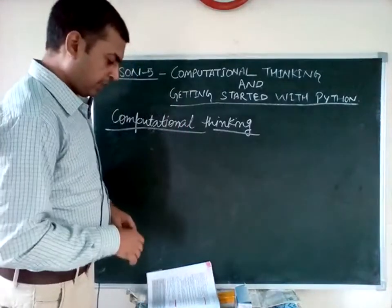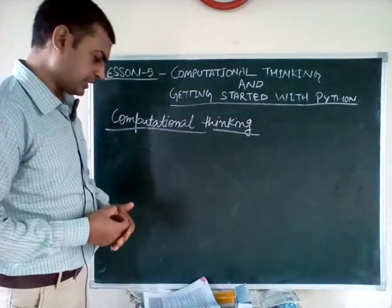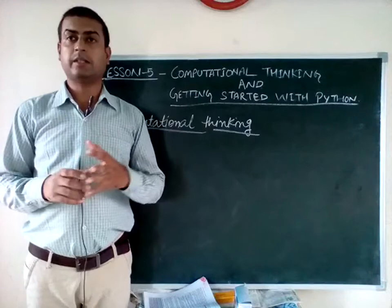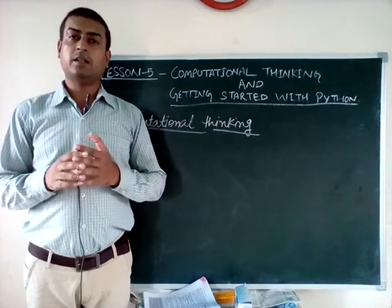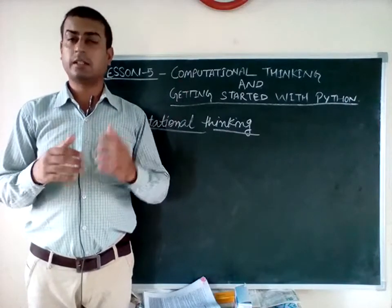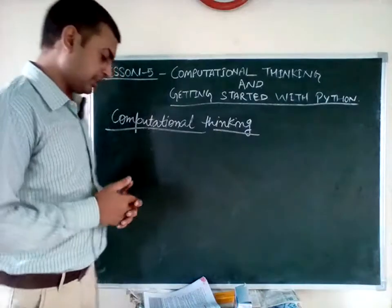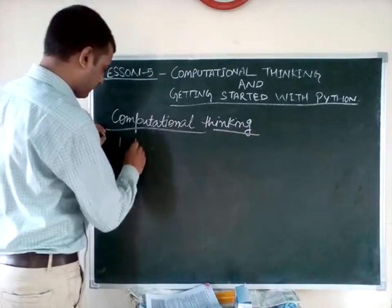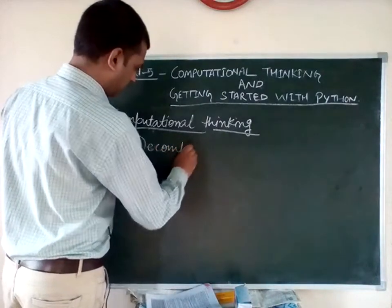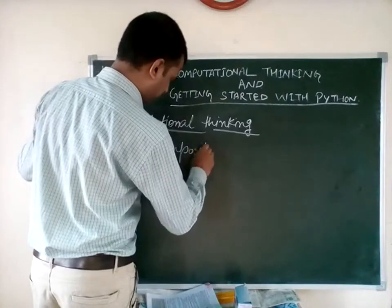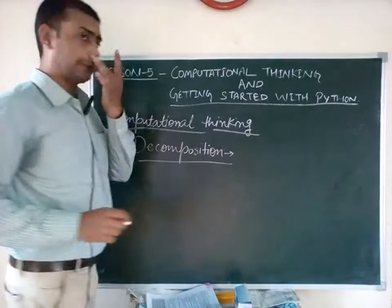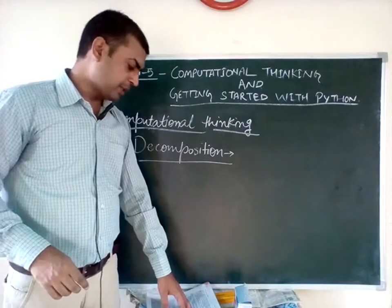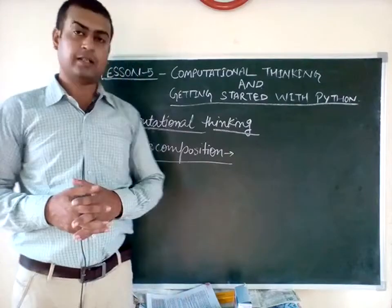Computational thinking is a problem-solving process that includes the following characteristics. We will consider everything in computational thinking and think about each and every point we can accept. The first characteristic is decomposition — the breaking down of a complex problem, data, or process into smaller, more manageable parts.